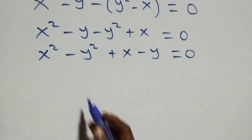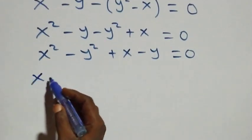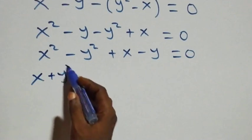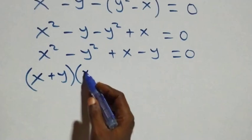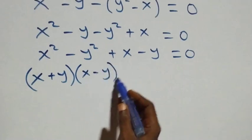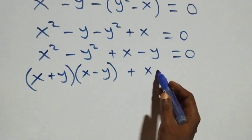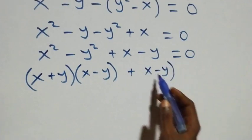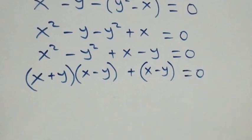From here we have a difference of two squares, which we can write as (x + y)(x - y), and we also put the remaining terms in brackets as (x - y), so the full expression is (x + y)(x - y) + (x - y) = 0.